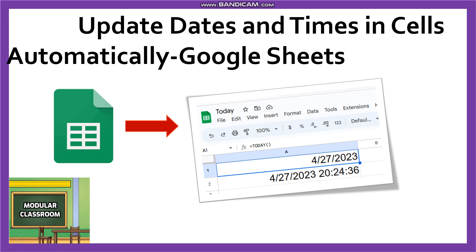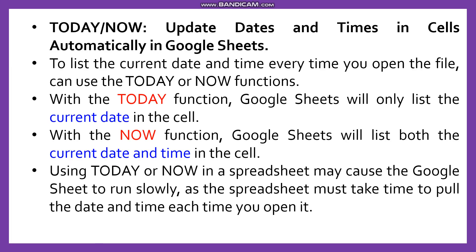Welcome to today's modular classroom. Today we are going to see two important functions in Google Sheets for updating the date and time in a cell. The first function is TODAY and the second function is NOW. The TODAY function displays the current date in the cell, and the NOW function lists both the current date and time in the cell. Whenever we want to update the current date and time in cells automatically, we can use these two functions.